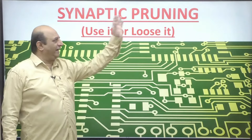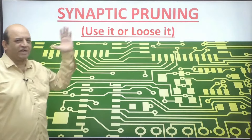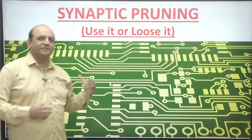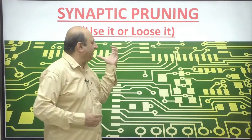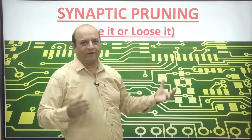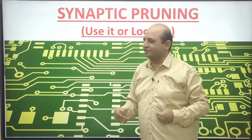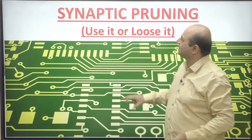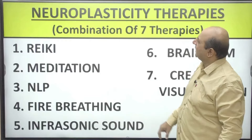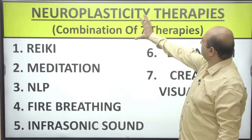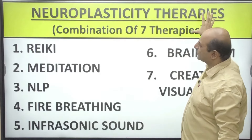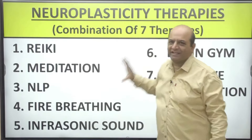Did you understand why we start losing brain cells and why these kinds of courses come into existence? The neuroplasticity course has seven therapies.